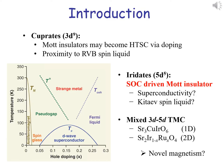3D compounds, such as cuprate superconductors, are known to host complex phase diagrams, which can be tuned by small perturbations due to strong electronic correlations or Mott physics. Recently, relativistic Mott insulators were found in certain 5D compounds, such as iridates, driven by strong spin-orbit coupling. We show that combining traditional and relativistic Mott insulators is a promising approach to novel magnetic properties, with two examples.